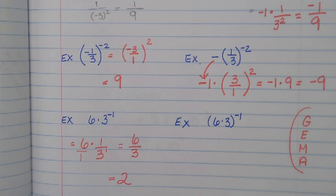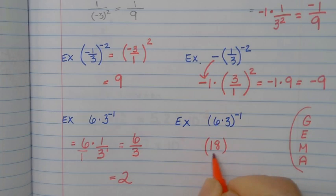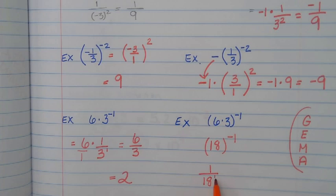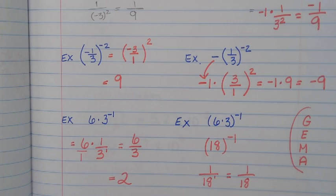The next one: we start with grouping symbols — there are grouping symbols I can actually work inside. So this becomes 18 to the negative one. Take care of that negative exponent by changing it to positive, taking that 18 to the denominator. It has an exponent of one but we really wouldn't write that — it's the understood exponent — so it's one over 18. Any questions there?